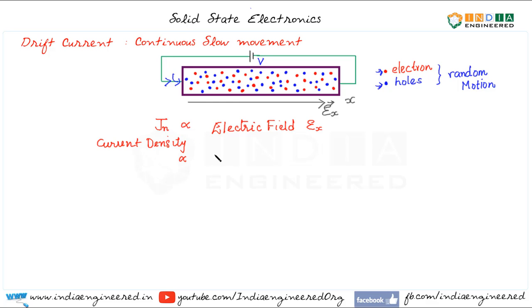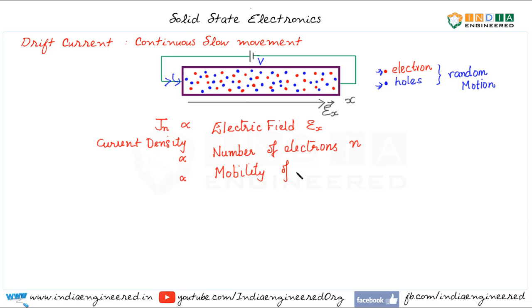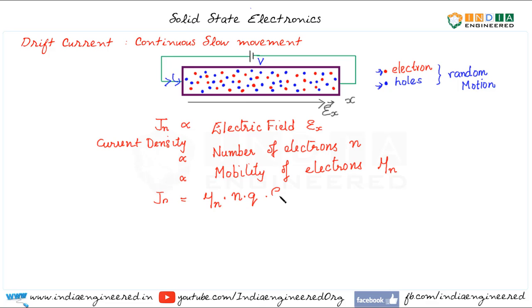Drift current density is proportional to the number of electrons. The current density is also affected by the mobility of charge carriers — higher mobility means higher current density. So it is also proportional to the mobility of electrons, denoted by mu_n. We can write Jn(x) as the mobility of electrons times the number of electrons times the magnitude of electron charge times the applied electric field.